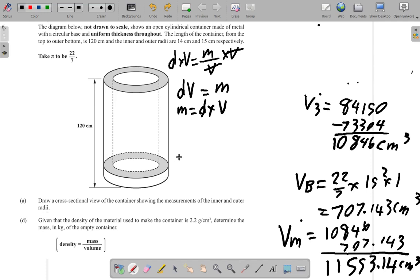Now they say the density is 2.2 grams per cm³, so the mass equals density, which is 2.2 times volume. Let me put in the units - you don't necessarily have to put in the units now, but I'll put them in: grams per cm³ times the volume. The volume, as you saw before, is 11553.14 cm³.